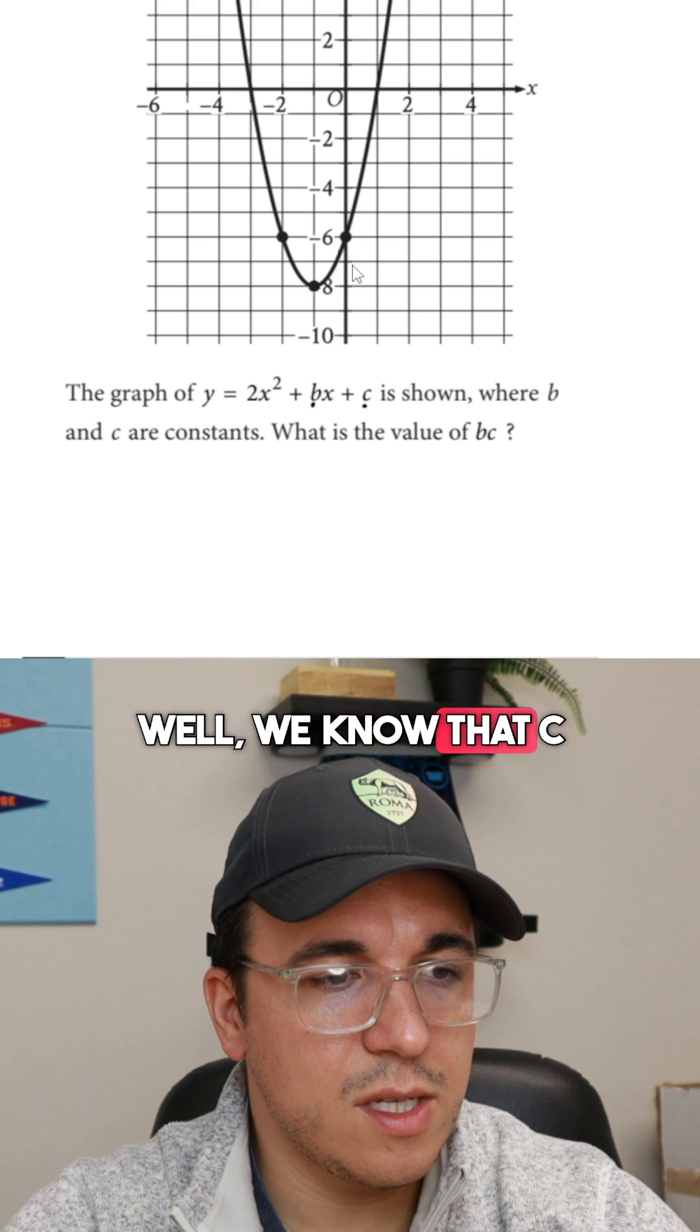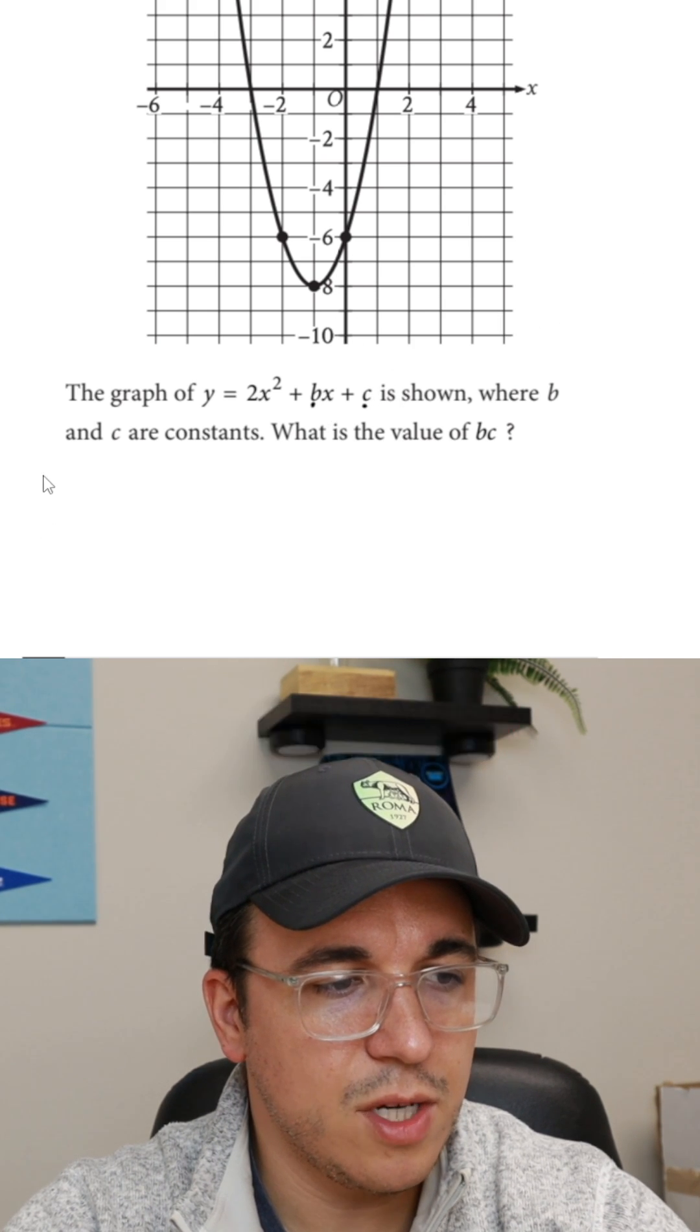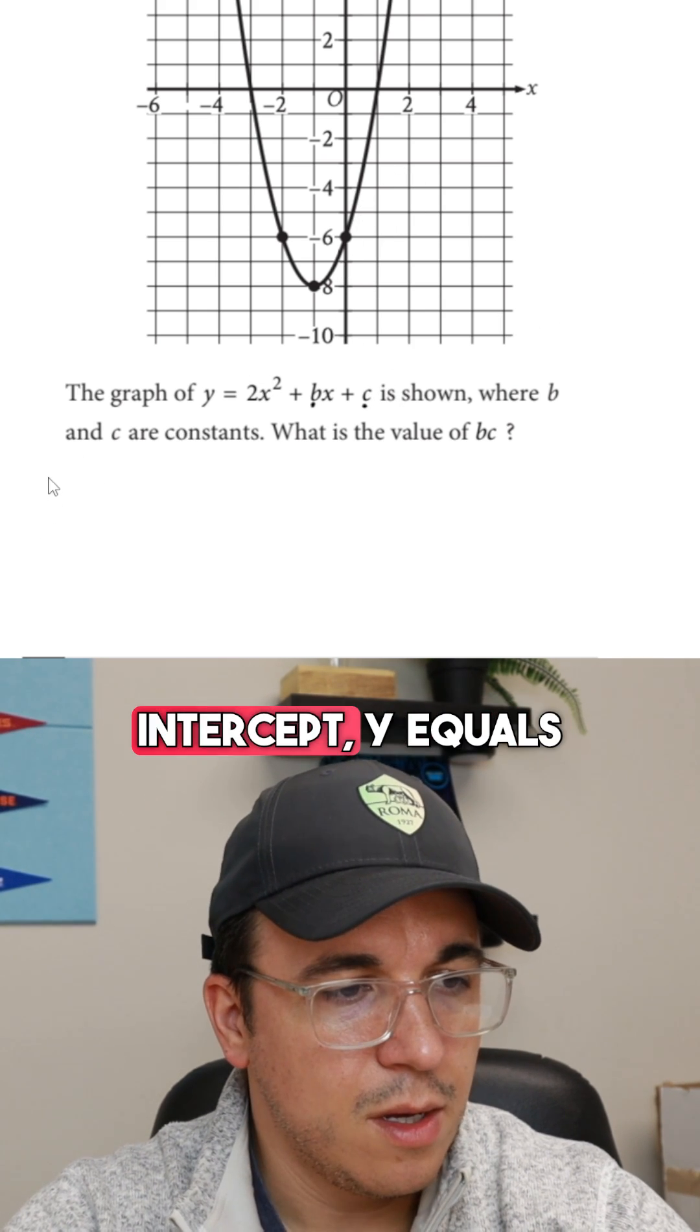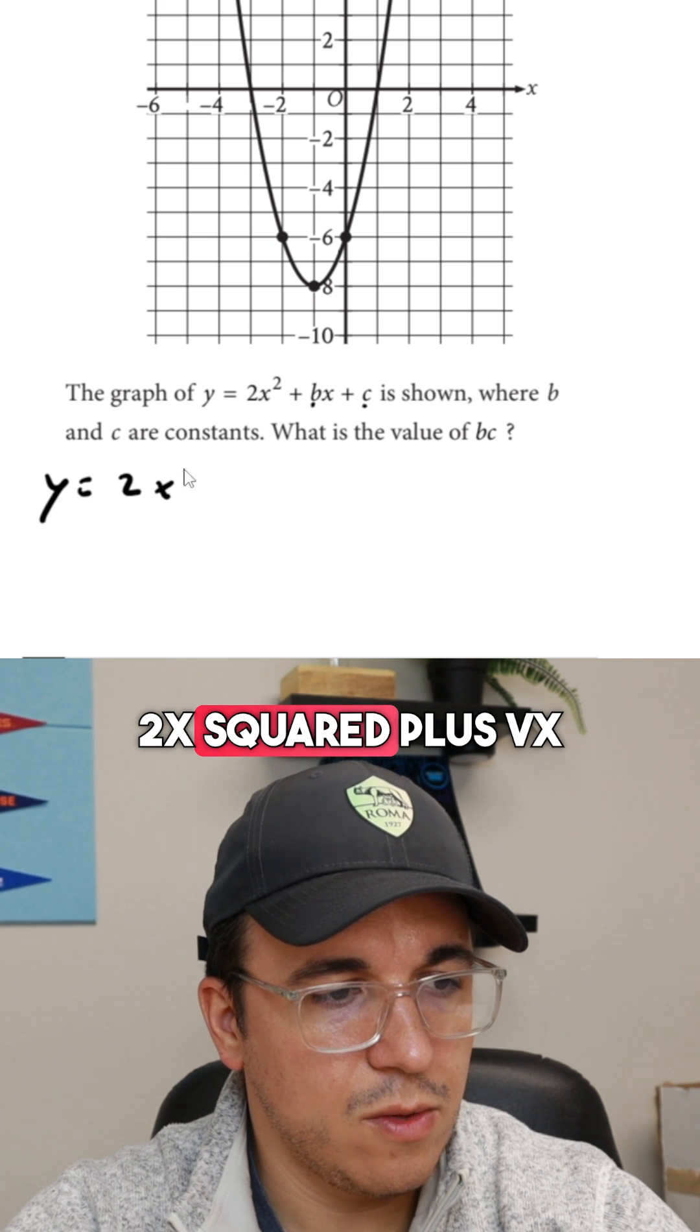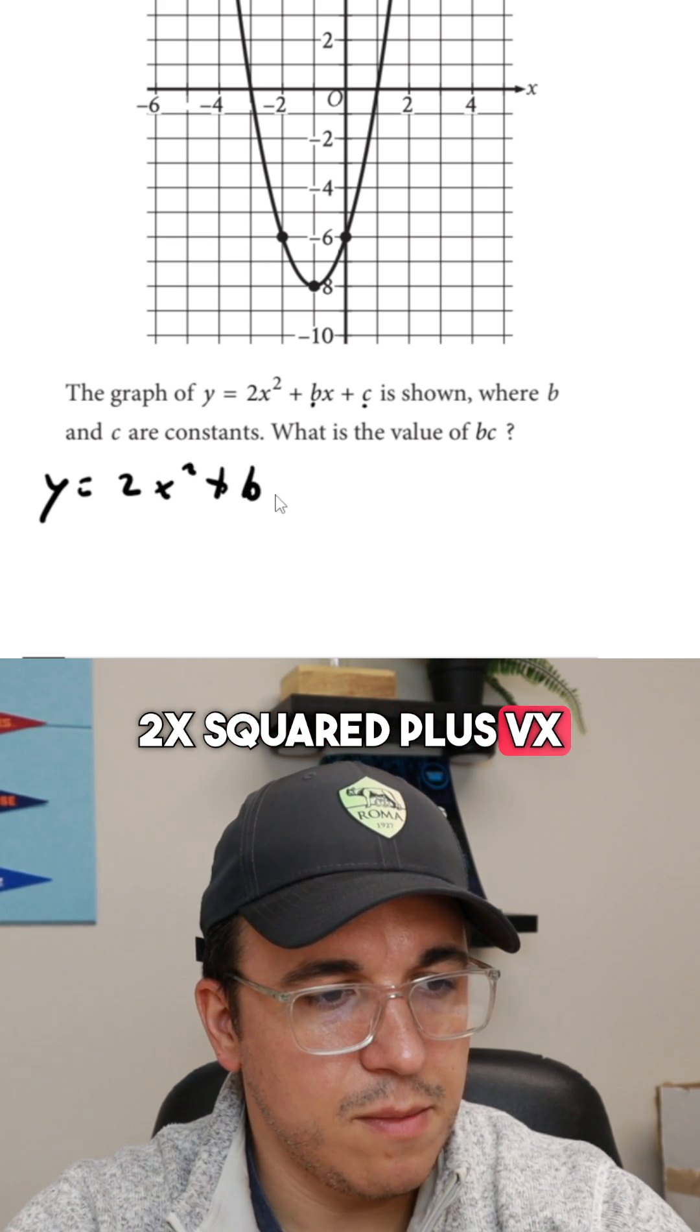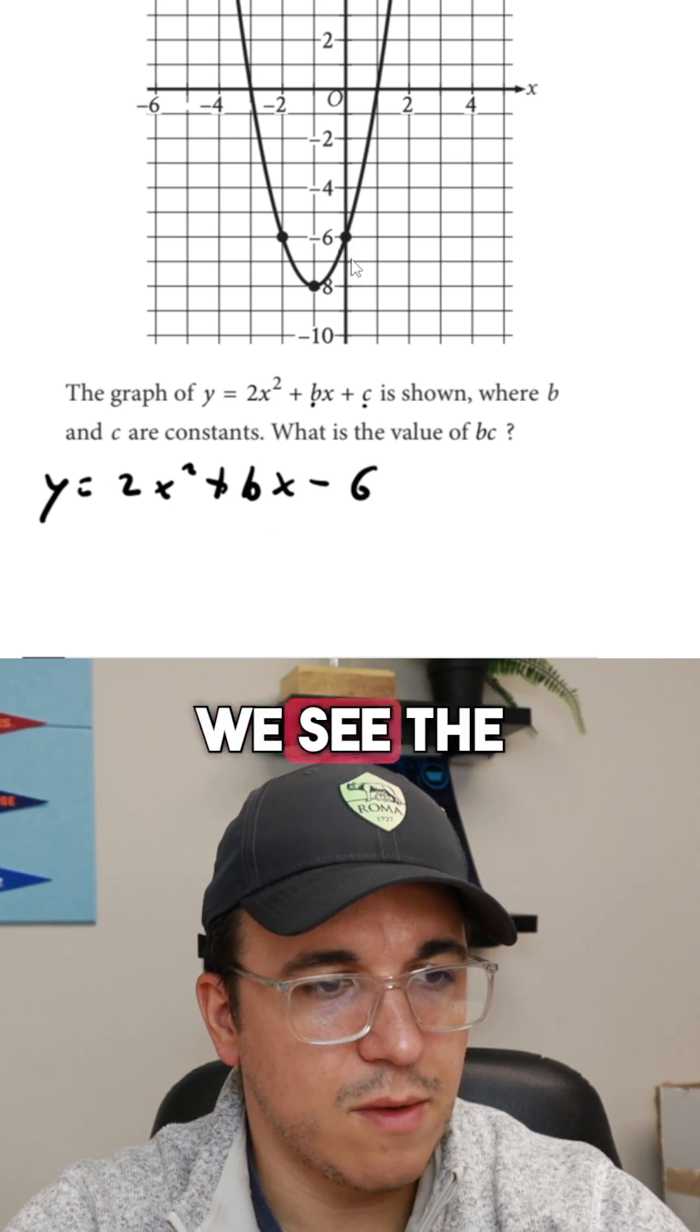Well, we know that c is going to be negative 6. So we can change this because the y-intercept, y equals 2x squared plus bx minus 6, right? So we see the intercept here.